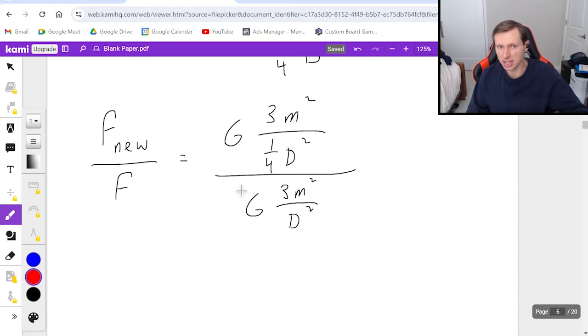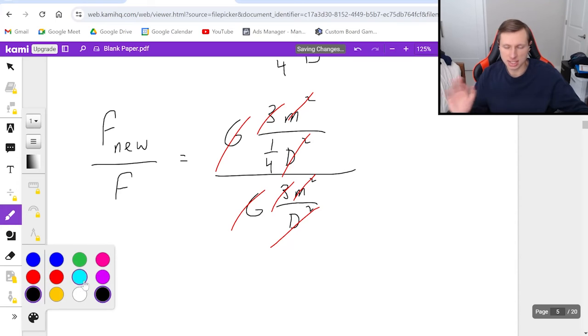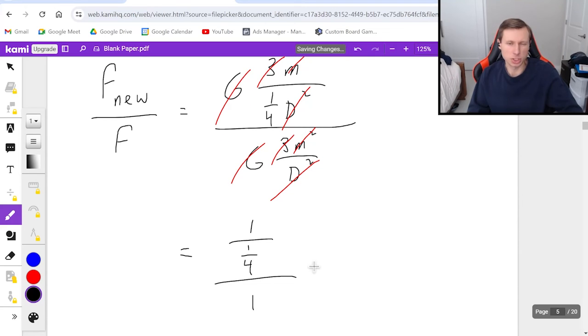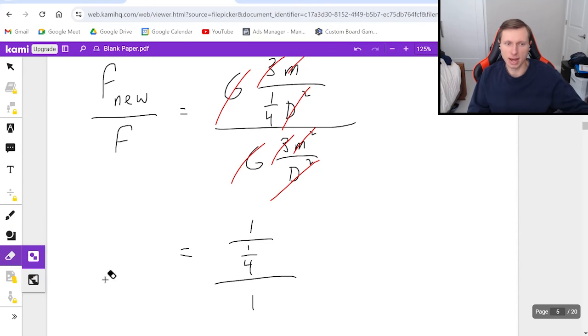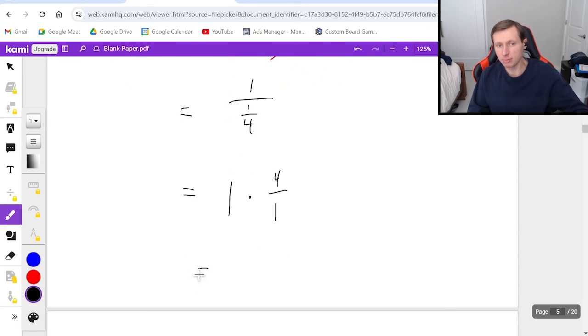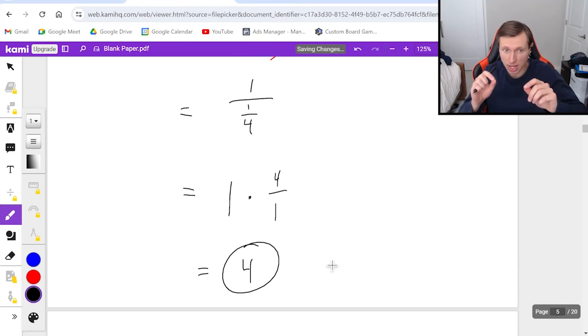Now the goal is to cancel out as many variables as I can. I see the G's cancel, I see mass cancels, I see D cancels, but not the 1 fourth, and I see the 3 cancels. And after all the dust settles and we see what's left, all that's left is 1 over 1 fourth over 1, which is a really confusing complex fraction. But the good news is we can make this easier by first of all saying this divided by 1 doesn't matter because you're just dividing by 1 so it's not even there. So really we just have 1 divided by 1 fourth. Whenever you have complex fractions, the easiest thing to do is to multiply by the reciprocal. Meaning, instead of 1 over 1 fourth, write 1 times 4 over 1, giving me a final answer of 4, which means when I move the planets closer together, it's going to be 4 times stronger the force than it was before.